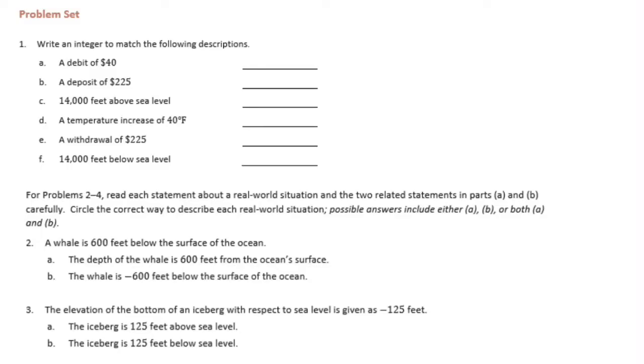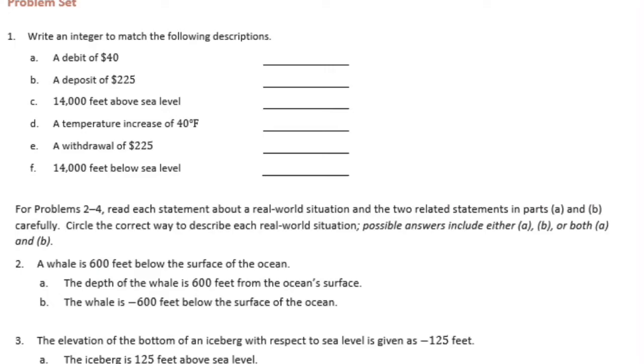A, a debit of $40. Debit means that you're losing money, so it's going to be negative 40. A deposit of $225. If you deposit money in your account, your money is gaining $225, so it's going to be positive.